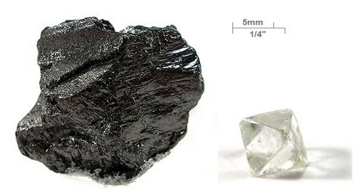Carbon was discovered in prehistory and was known in the forms of soot and charcoal to the earliest human civilizations. Diamonds were known probably as early as 2500 BCE in China, while carbon in the form of charcoal was made around Roman times by the same chemistry as it is today, by heating wood in a pyramid covered with clay to exclude air. In 1722, René-Antoine Ferchault de Réaumur demonstrated that iron was transformed into steel through the absorption of some substance, now known to be carbon.